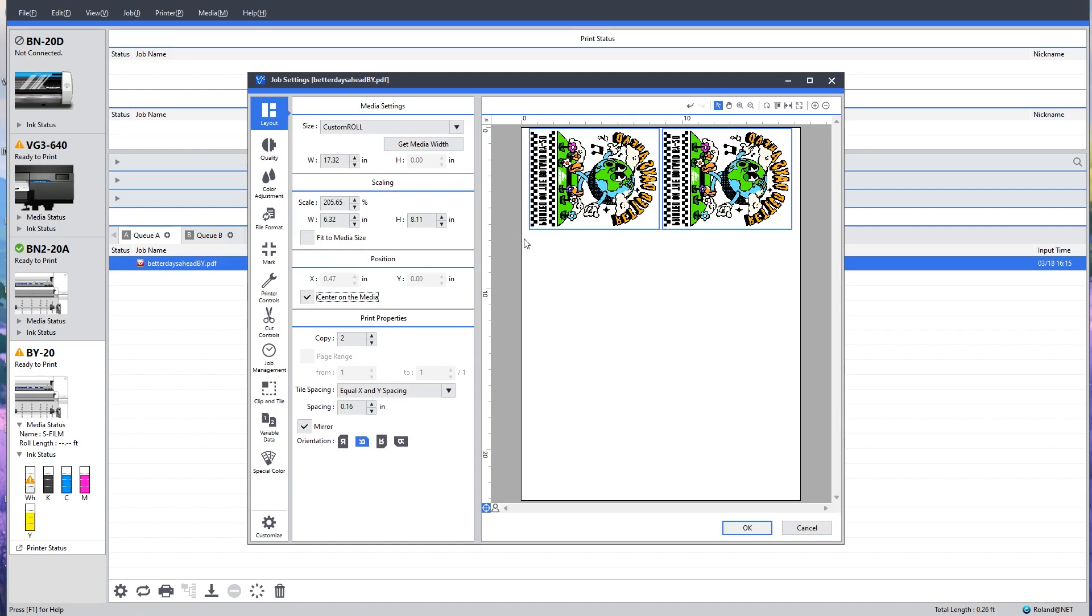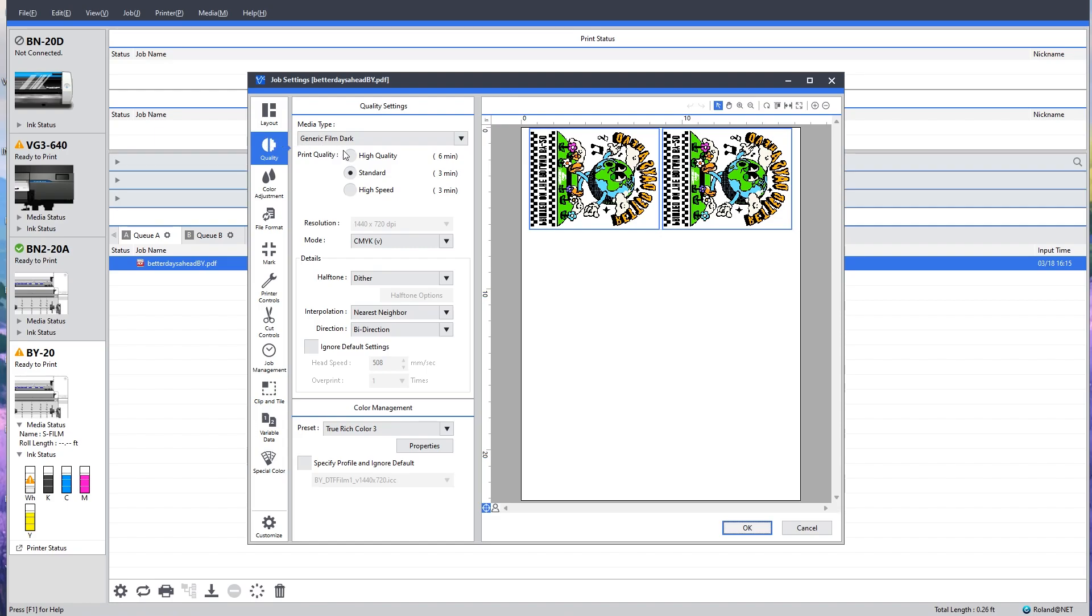I always like to center on the media just in case to leave enough room on both sides. Also always make sure that everything is mirrored. Quality I'm going to leave the same, and it's giving me an estimate that it'll take three minutes to print both of these at standard quality.